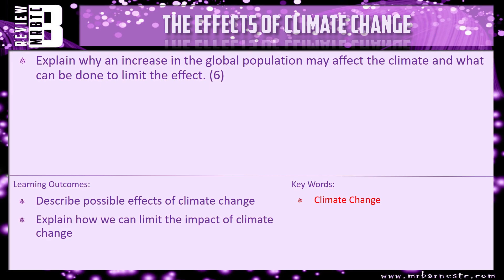That's really everything you need to know. There's a review question: explain why an increase in the global population may affect the climate and what can be done to limit the effect. Think about what more people means in terms of burning fossil fuels, need for food and livestock, then think about what we can do to ensure climate change is reduced. That brings this video to an end.